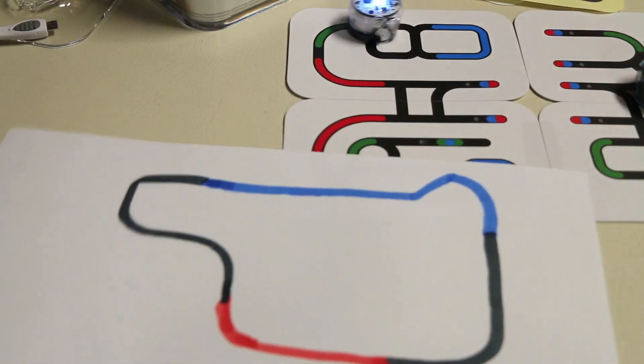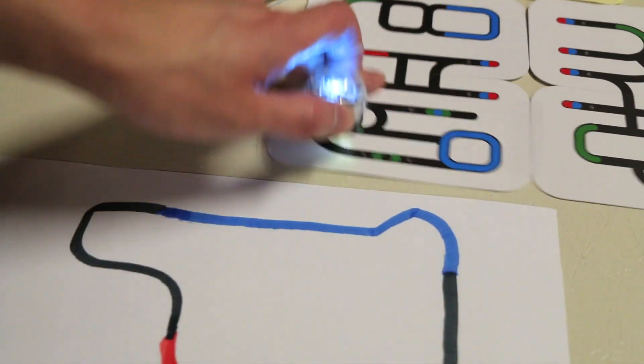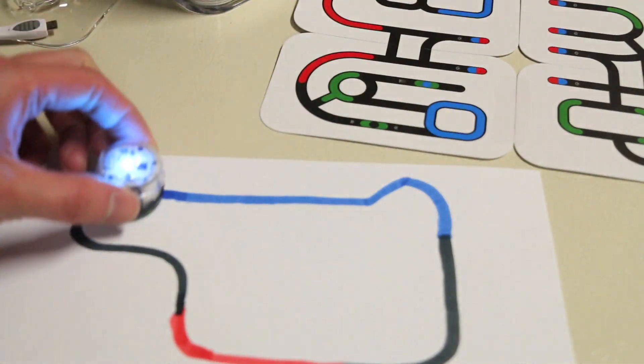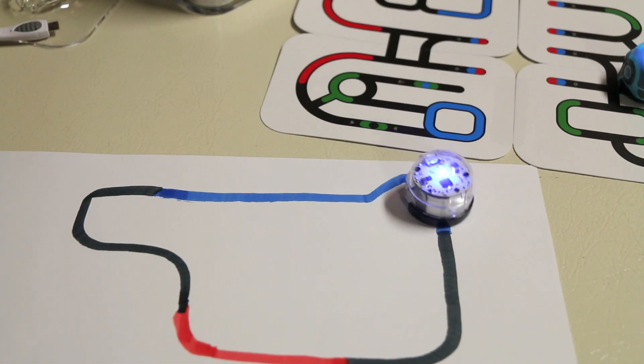So here is a path I drew up, it's pretty simple, nothing too crazy, let's grab one of the Ozobots here, move this one aside a bit, place it down and it should work. And as you guys can see, it does work, so that's pretty cool.